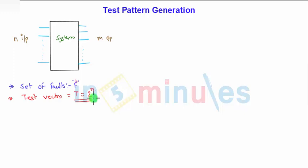So we will find out the smallest subset of the test vector. We call it as V, which will cover all the faults.